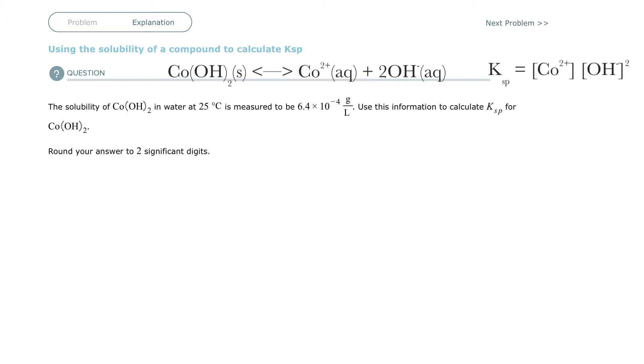They have told you that cobalt hydroxide has a certain solubility, that there's a certain amount of grams that will dissolve in a liter. And then they're asking you for the constant, the solubility constant.